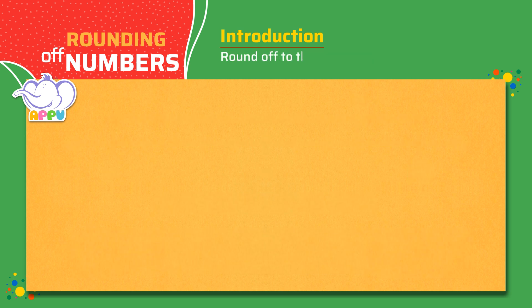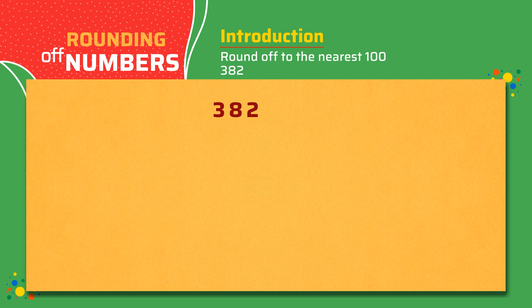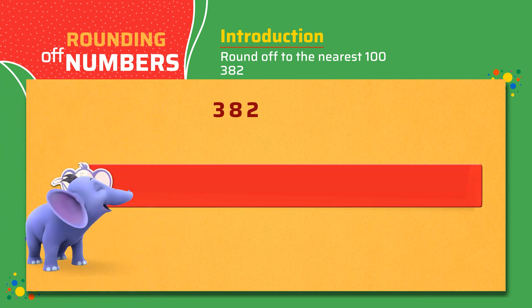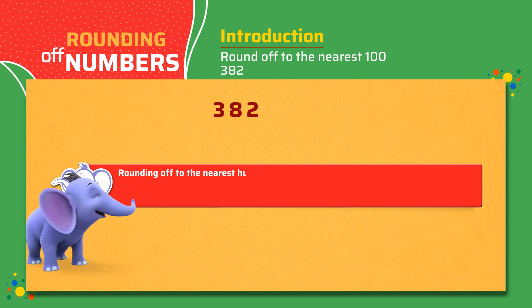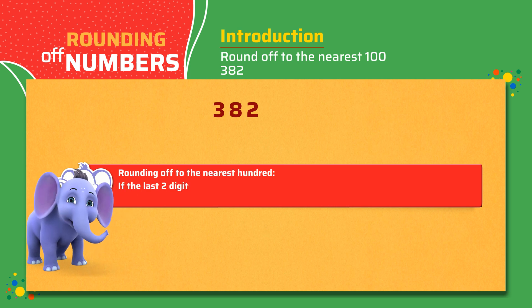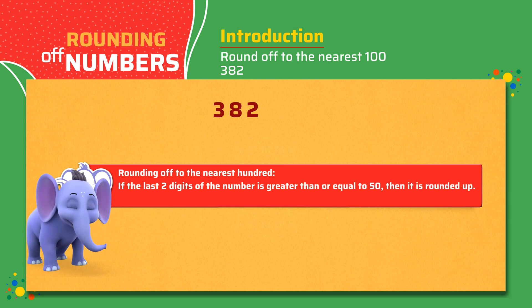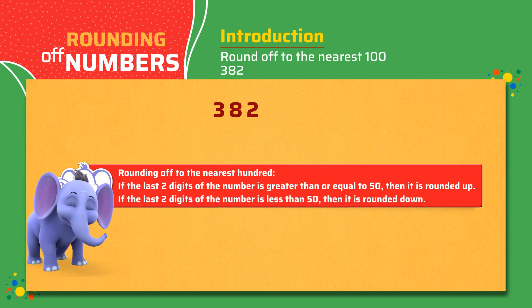Rounding off to the nearest 100. Let's look at an example — 382. If the last two digits of the number are greater than or equal to 50, then it is rounded up. If the last two digits of the number are less than 50, then it is rounded down.